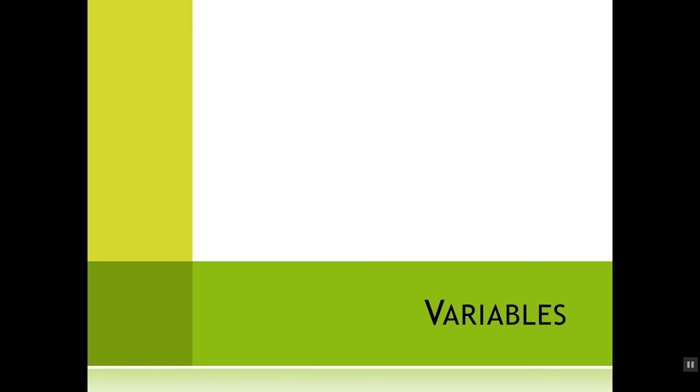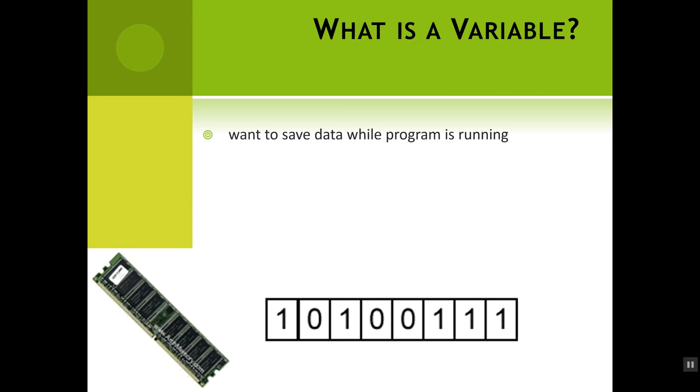In programming, a variable is used to store a value while your program runs. It's a location in the memory of the computer that you've assigned a name. So long as your program is running, that location in memory will hold a certain value, or you can change what the value is. It provides a container where you can keep track of things as your program runs.